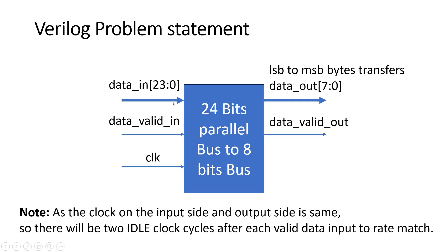We will give these three bytes at data output in three clock cycles, and this data_valid_out will remain high for three clock cycles. Then only this data will be considered as valid data.